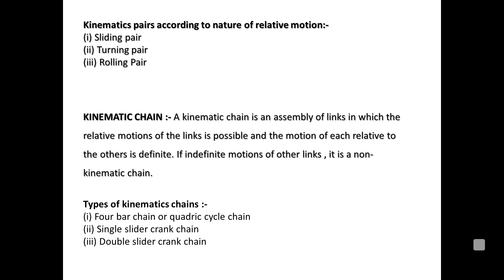A kinematic chain is simply an assembly of links in which the relative motion of the links can transmit motion. If that motion is in a definite direction, it is a kinematic chain; if the motion of one link causes indefinite motion of another, it is a non-kinematic chain.